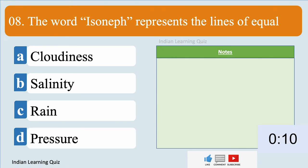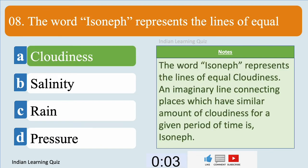The word isonef represents the lines of equal cloudiness.